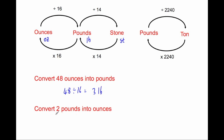Next, convert 2 pounds into ounces. To go from pounds into ounces, we times by 16 because in each pound there are 16 ounces. So 2 times 16 is equal to 32. So the answer is 32 ounces.